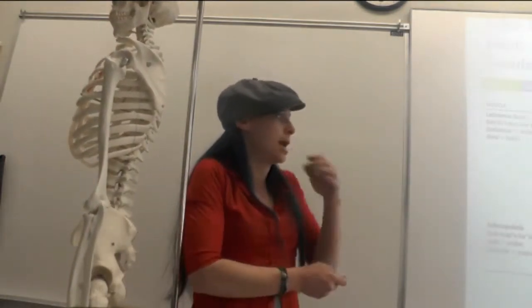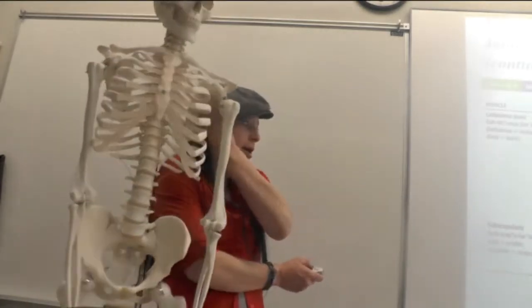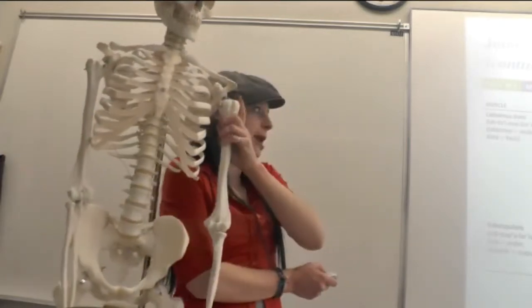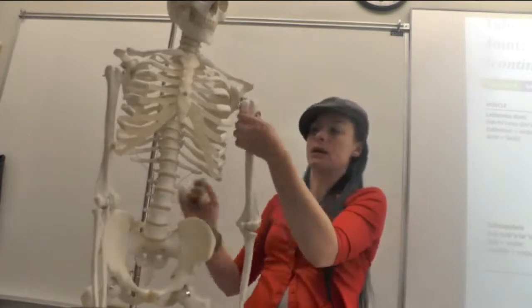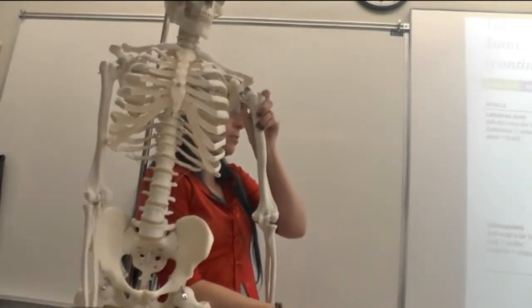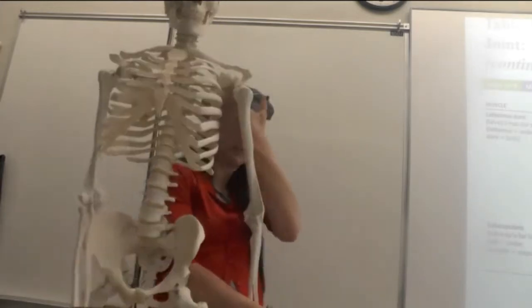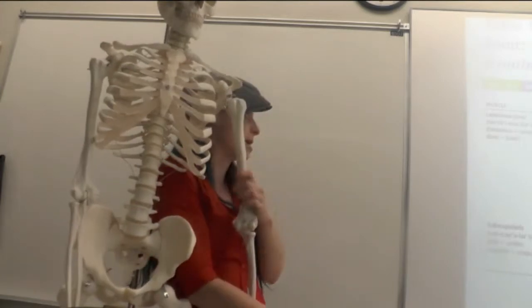Subscapularis originates in the subscapular fossa, which is right here, and it inserts on the lesser tubercle of the humerus. And it is the chief medial rotator. So if you imagine, it's inserting on the humerus here, and it's sitting right here in your shoulder, basically. And when it pulls, it's going to help medially rotate your humerus.